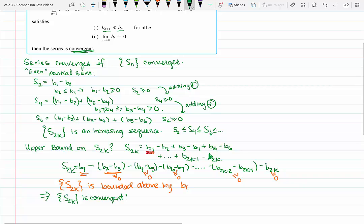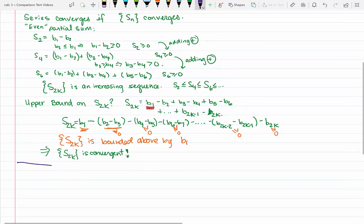Well, what if it's only the even partial sums that converge? We better consider the odd ones. So let's look at the odd partial sums.